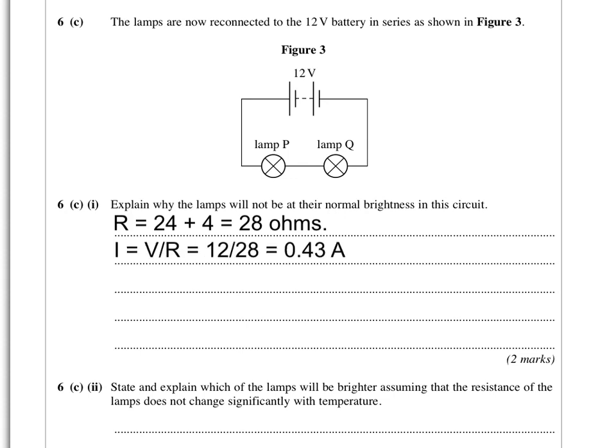We've got 12 volts pushing current through that circuit with a total resistance of 28 ohms. The current is voltage divided by resistance, which is only 0.43 amps. If you remember, lamp P needed 3 amps and lamp Q needed half an amp. So that current passing through both lamps in series is not enough to produce normal brightness. Two marks - illustrate with numbers if you can, but you'd get the marks if you just talked about the voltage being shared and the current being less than required.